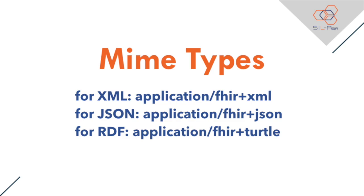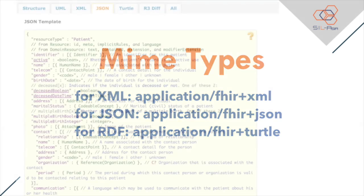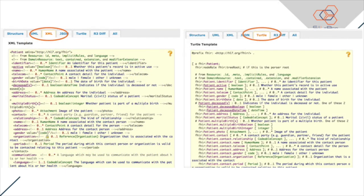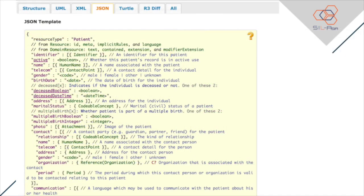The correct MIME types that should be used by clients and servers are: for XML, application/fhir+xml; for JSON, application/fhir+json; and for RDF, application/fhir+turtle, where only the Turtle format is supported. Here is an example of a resource template represented as a FHIR object in JSON. Examples in XML and Turtle can be seen in the resource content part of the specification. In our further instructions, examples, and commands, we will be using the JSON format.